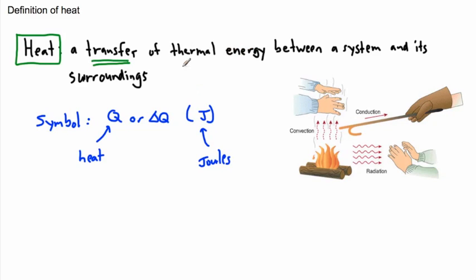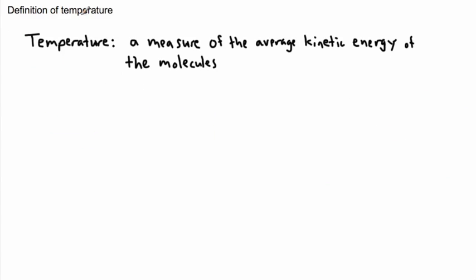That should make sense because joules are a form of energy. An object can't contain heat, just like an object can't contain work. Work and heat are all about transferring energy. What we can do now is go on to another definition: temperature.